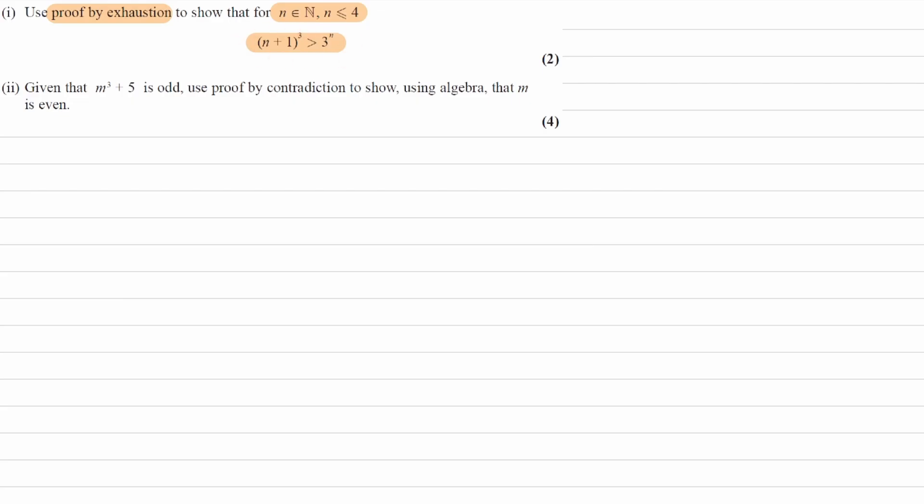Okay, so let's look at that statement. Let's look at what we have over here. n is a natural number, and n is less than or equal to 4.